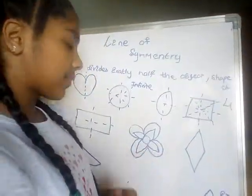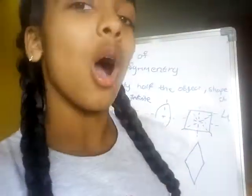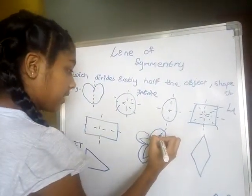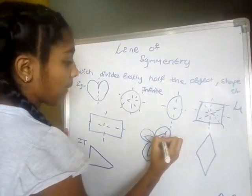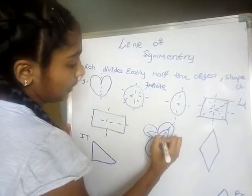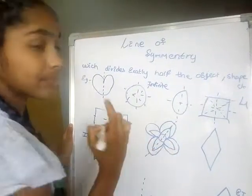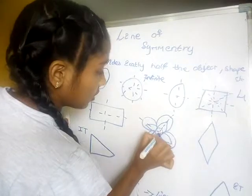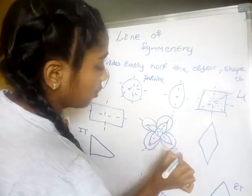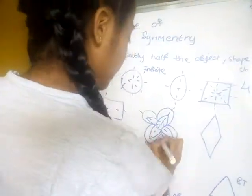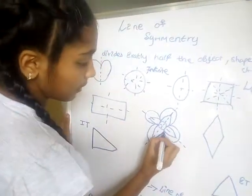Now a flower. How to do a flower? Four lines of symmetry. One line exactly passing at the middle — like this. One, two, and next from here.